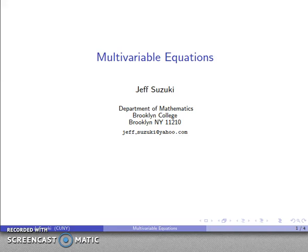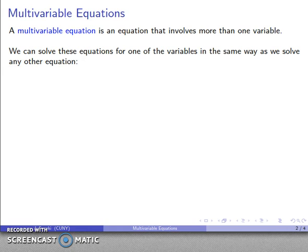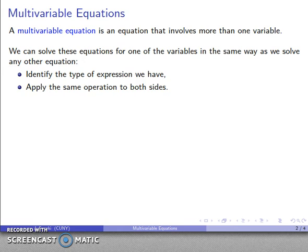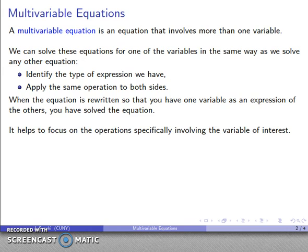The next thing we ought to consider are multivariable equations. A multivariable equation is an equation that involves more than one variable. We can solve these equations for one of the variables in the same way that we solve any other equation. We can identify the type of expression that we have, apply the same operation to both sides based on our expression, and when the equation is rewritten so that we have one variable as an expression of the others, we have the equation solved for that variable. It helps to focus on the operations that specifically involve the variable of interest. All other operations are not really that important except for bookkeeping purposes.